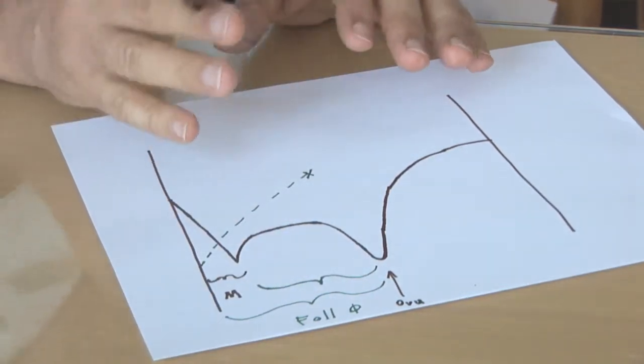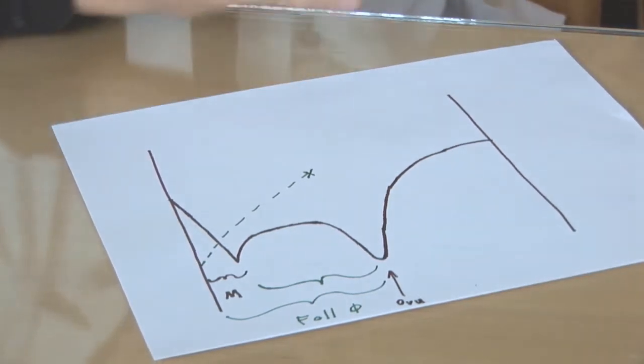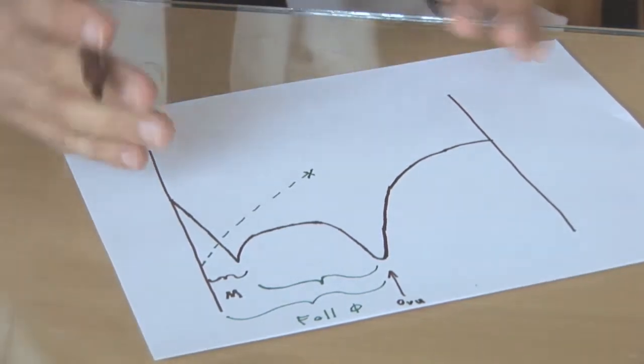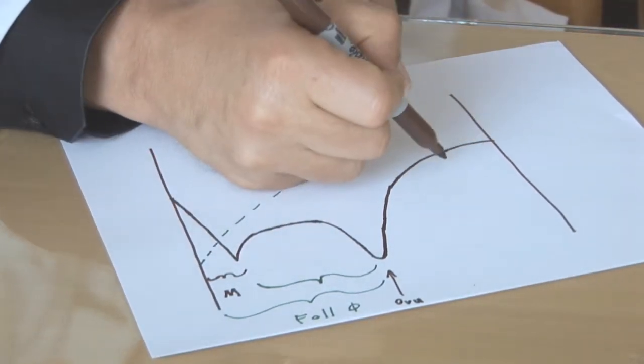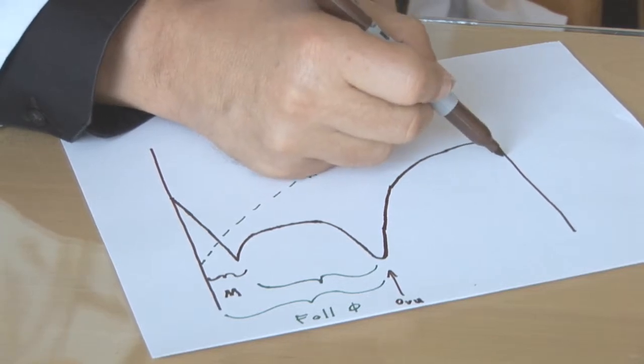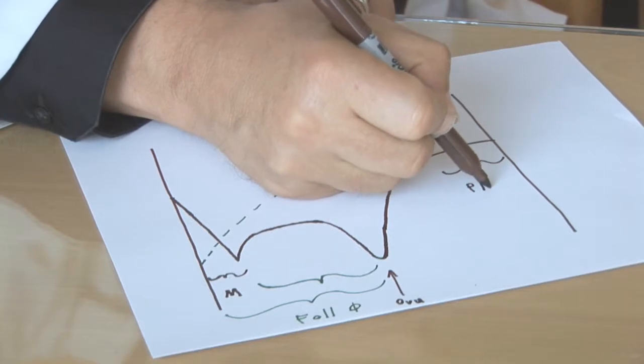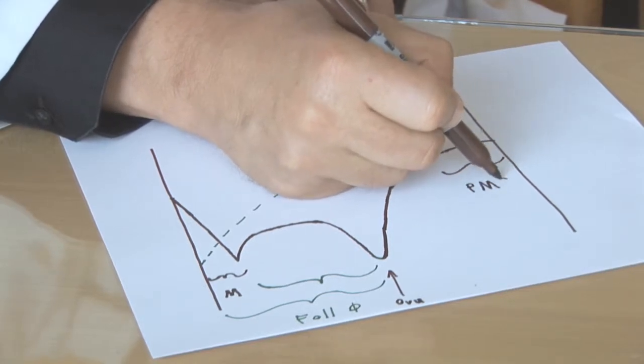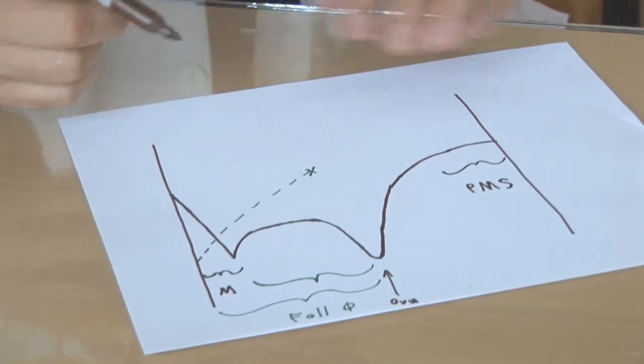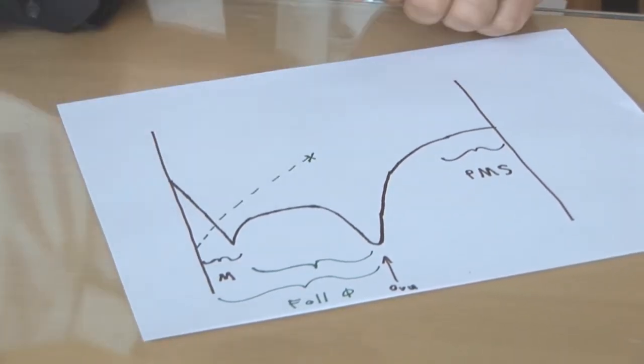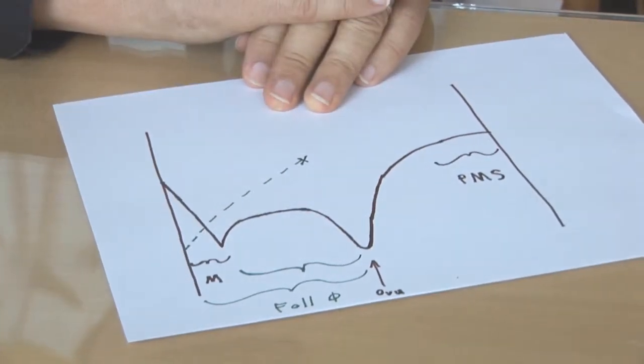And a lot of people, including women, will confuse ovulation with when the period's coming and things like that. They're very different as you can see. Right here, or this area here, is when we usually associate with all the signs and symptoms of the dreaded PMS. That's leading up to the period. And some women still experience many of the symptoms during their period as well.